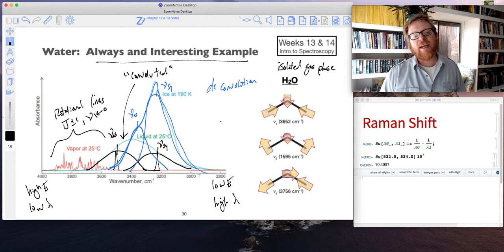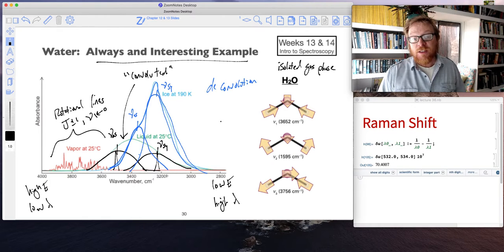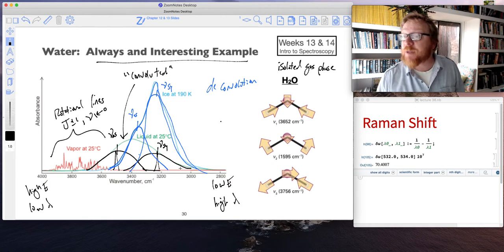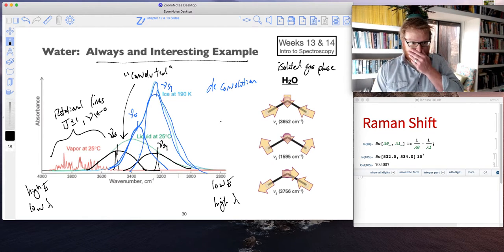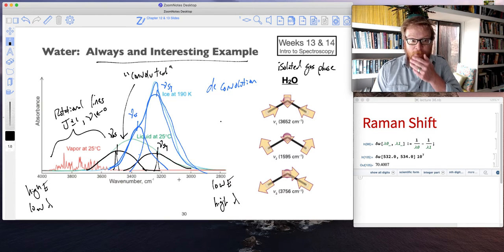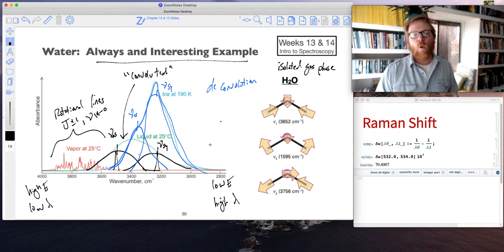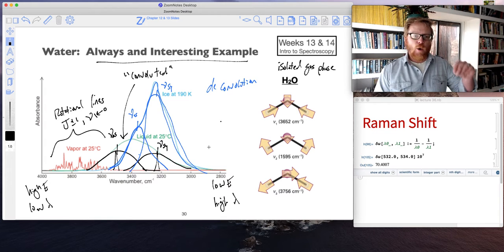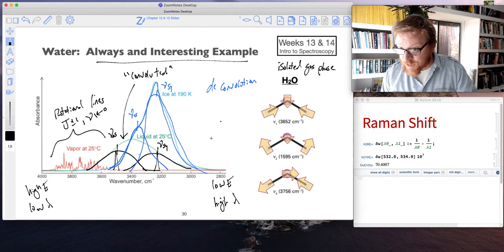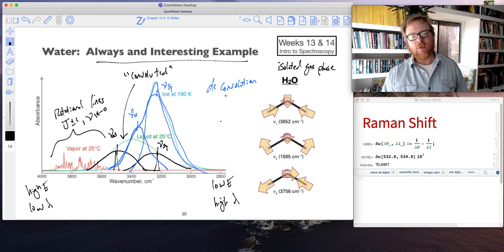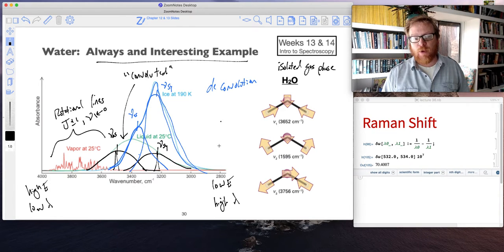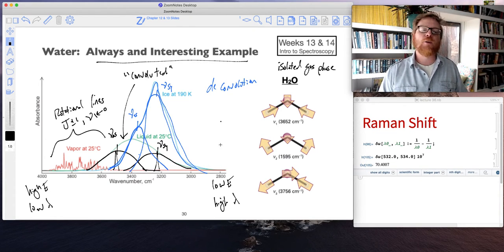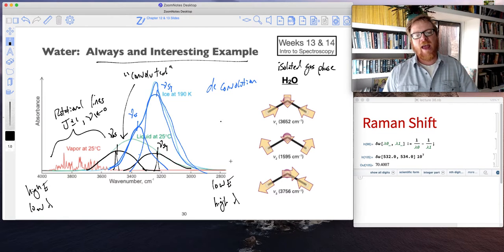Even if we weren't looking at just simple arrangements of molecules like vapor, liquid, ice, suppose we were looking at really complicated arrangements of molecules, perhaps some intermediate in a chemical reaction or some molecule adsorbed to the surface of something. We can also use this deconvolution process to work out those types of details when we have non-trivial arrangements of molecules.